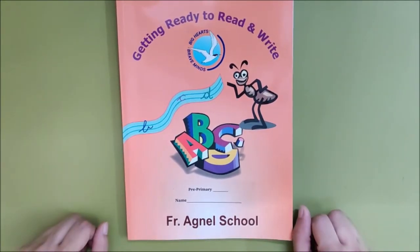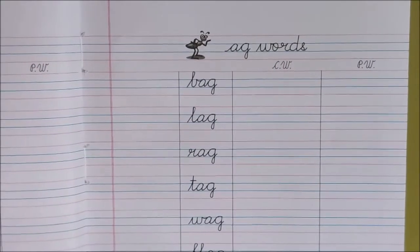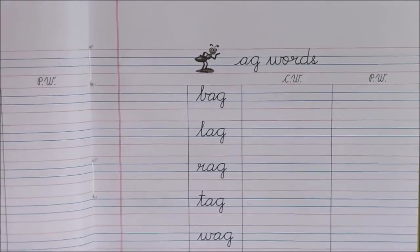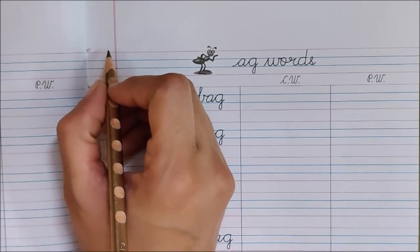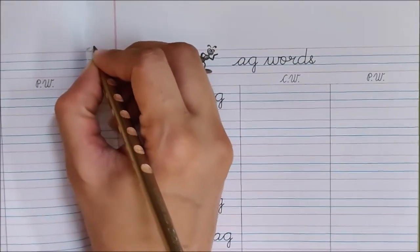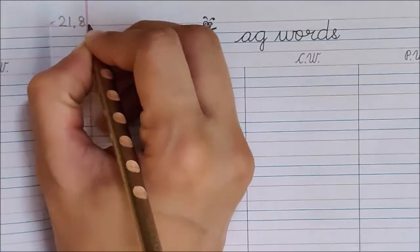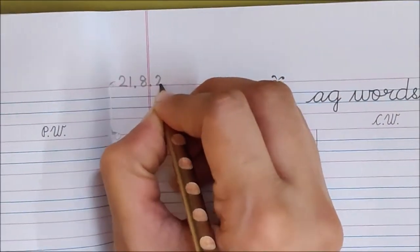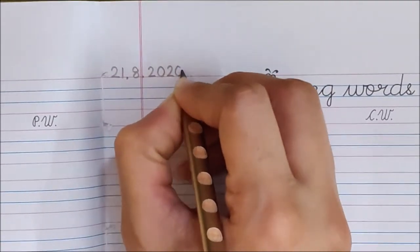So open page number 9. I have opened page number 9. Today we will do this page. So children write down the date here. Today is August 21. 21 dot, 8 dot, 20, 20.